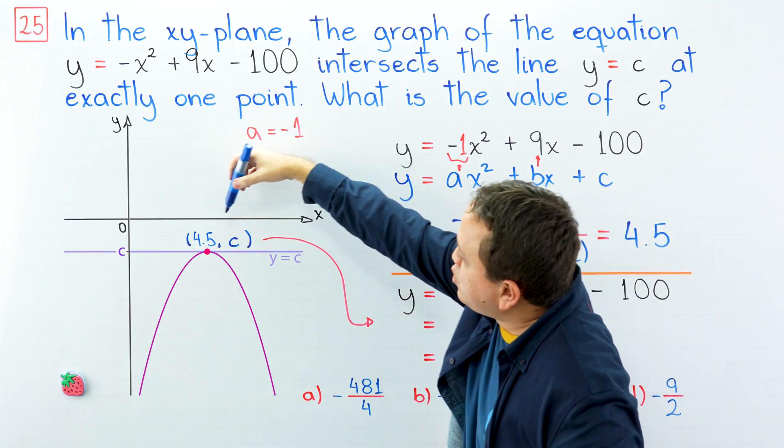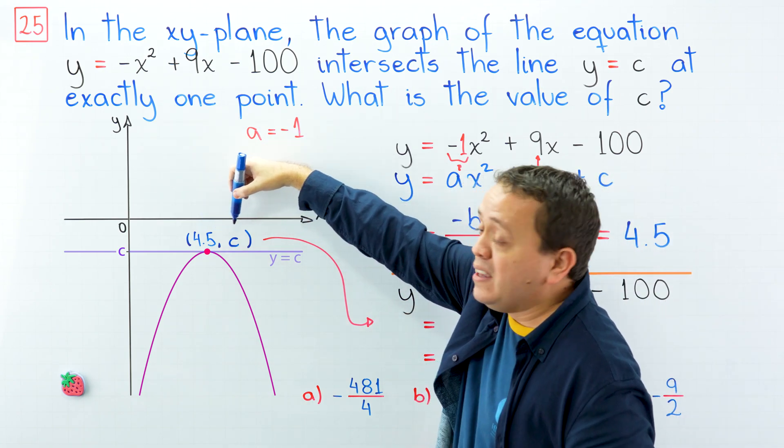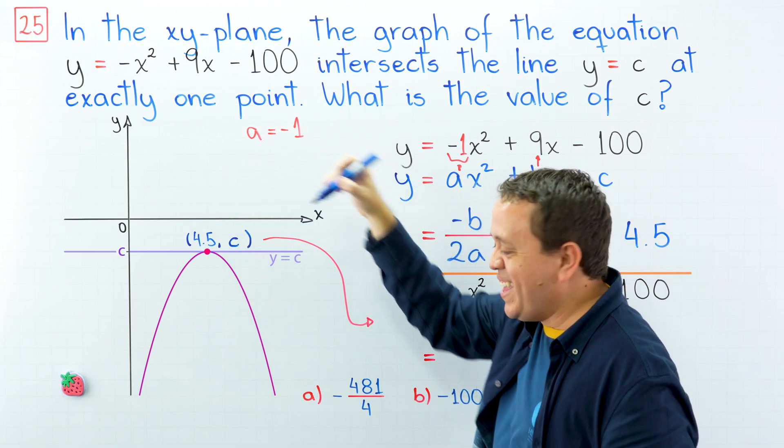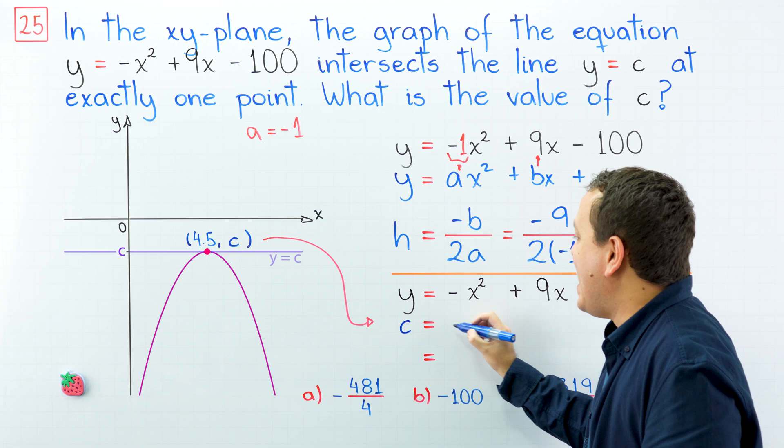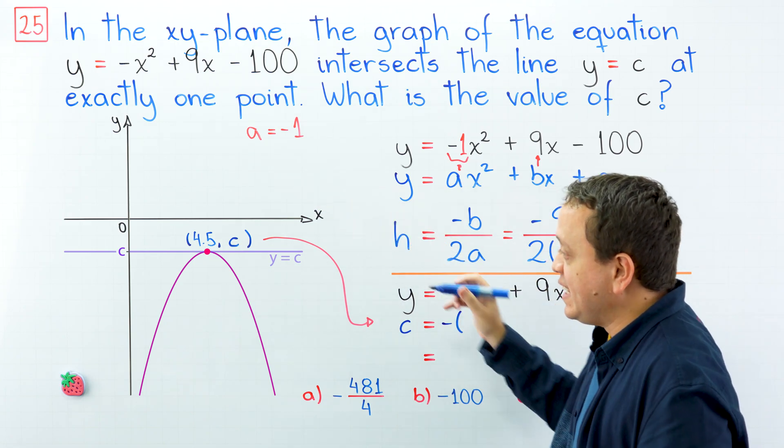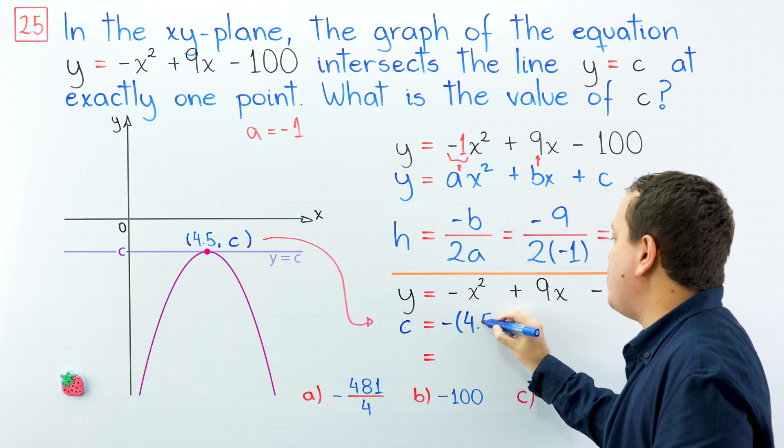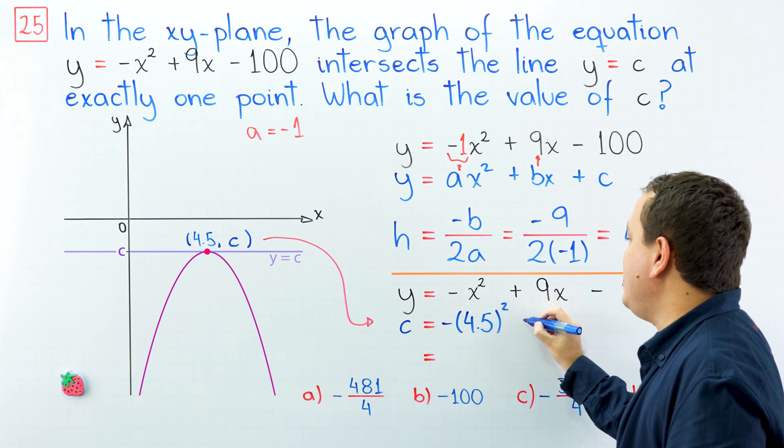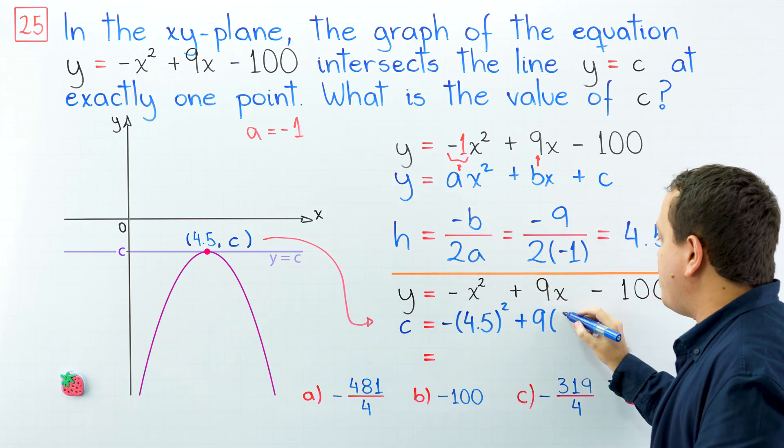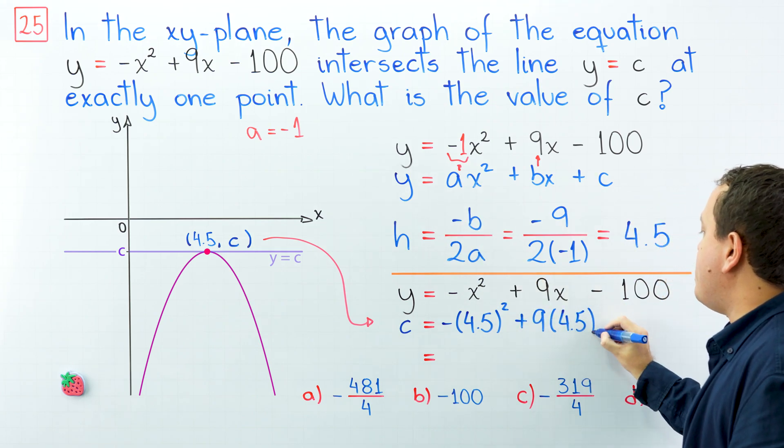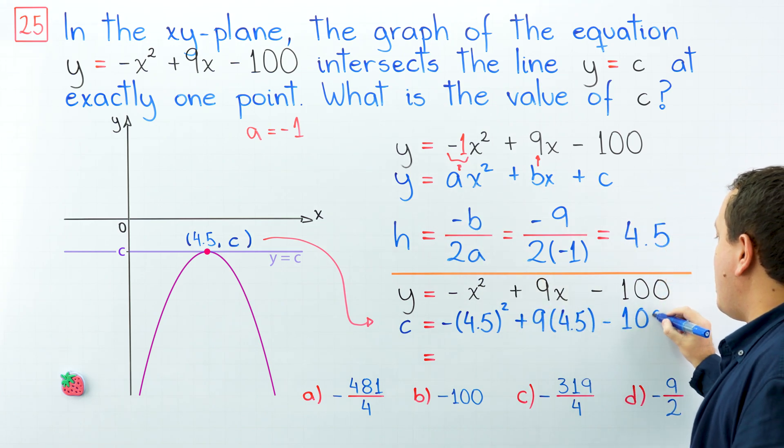Instead of x, we're going to use 4.5. Instead of y, we're going to use c. We're going to replace y with c. And this is equal to -x². But x is 4.5. Don't forget the exponent. Plus 9 times x. x is 4.5, minus 100.